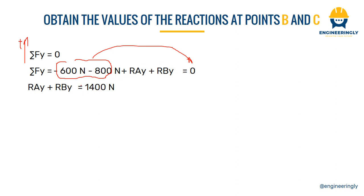Next we have the summation of forces in the x direction equal to zero. Again we will assume the rightward direction to be positive; forces acting in the opposite direction will be assumed to have negative signs. Since we have only one force — which is the reaction of point A in the x direction — that specific force will equal to zero.